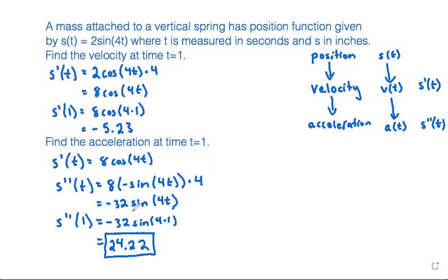It's possible for velocity to be negative and acceleration to be positive. That could be the case when the spring is moving downwards but slowing down. So yes, it's possible to have both a negative velocity and a positive acceleration at the same time.